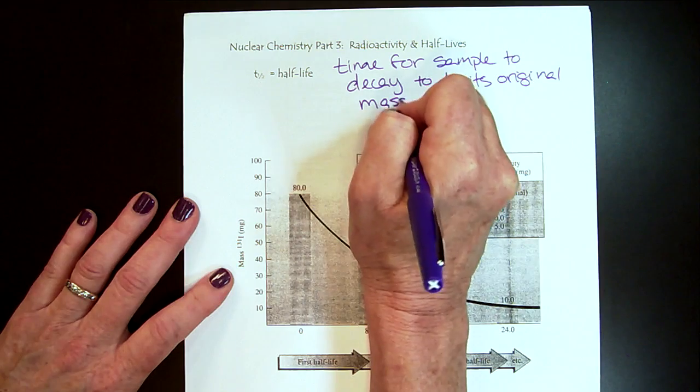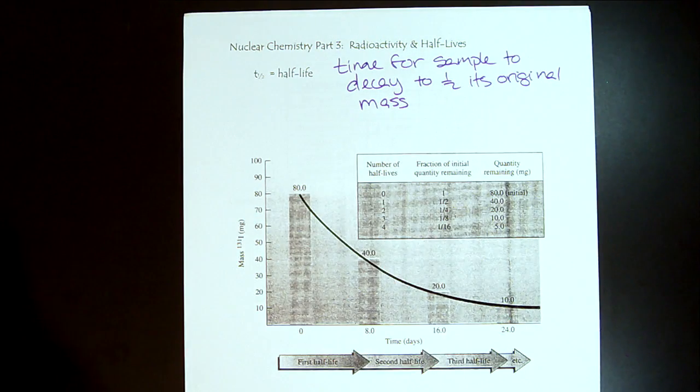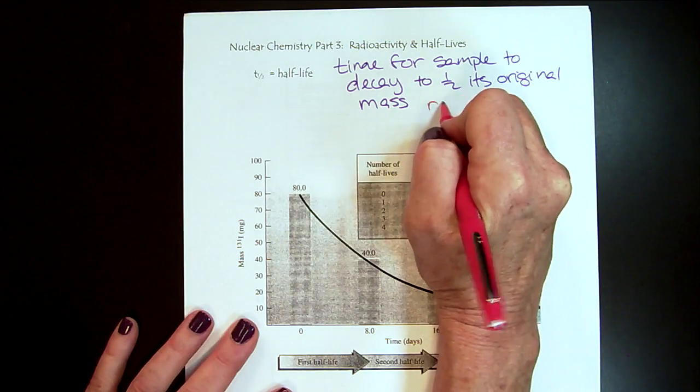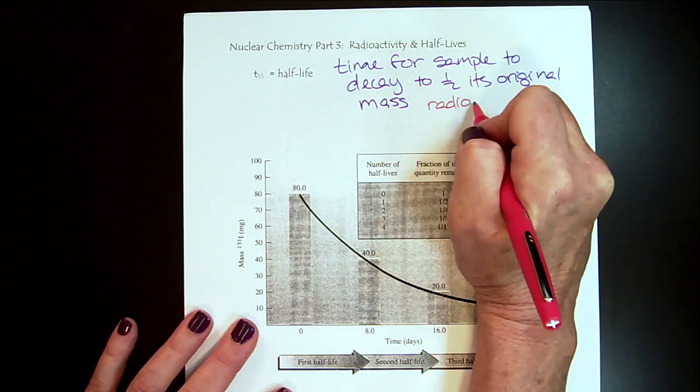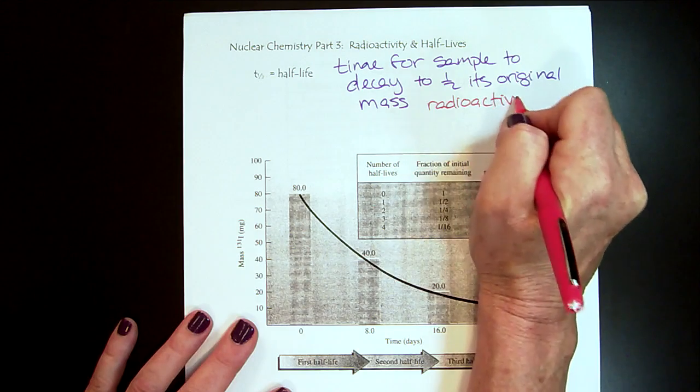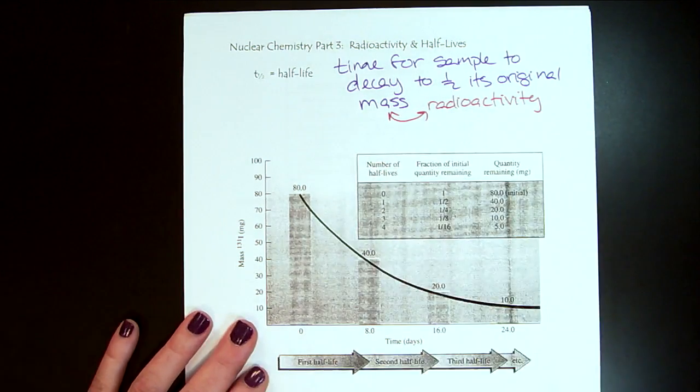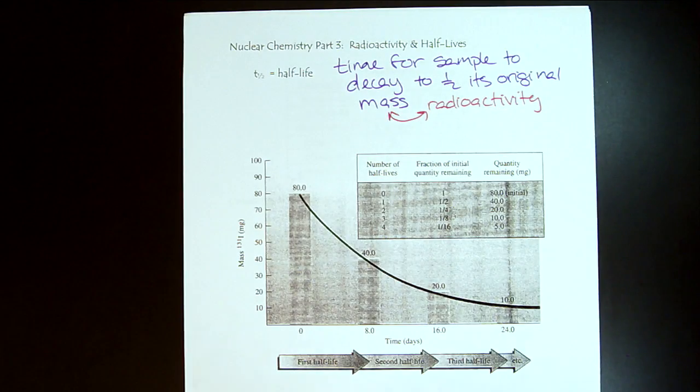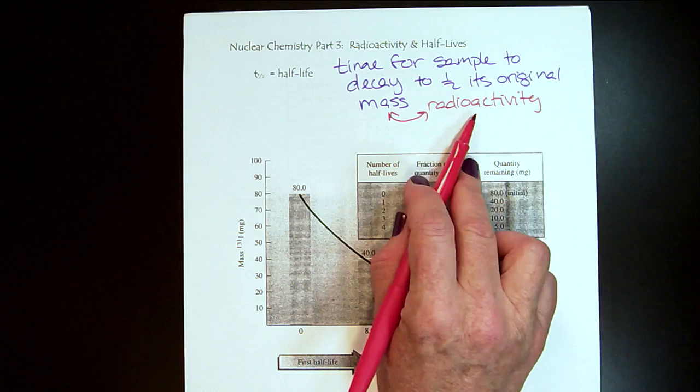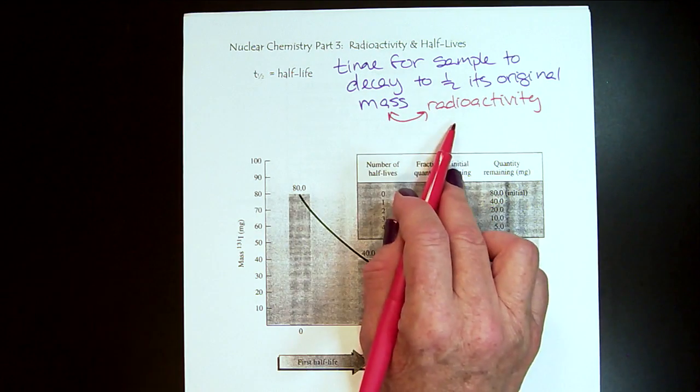Very often with radioactive substances there might not even be enough to measure, so the radioactivity will drop. With radioactive substances, the measurable radioactivity and the mass are proportional to each other. The more mass, the more radioactivity. The less mass, the less radioactivity.